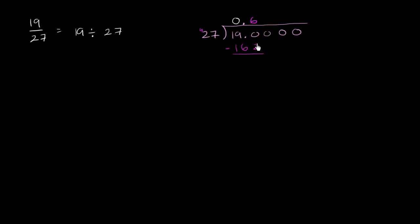When we subtract, 190 minus 162... Actually, we could have had another 27 in there. When we subtract, we get a 10 from the tens place, so that becomes 8 tens. This becomes 28. We could have put one more 27 in there. So let's do that.